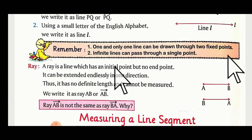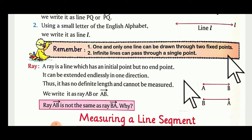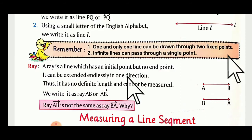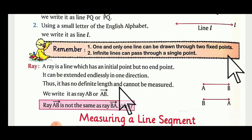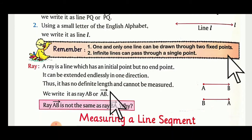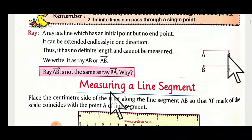What is a ray? A ray is a line which has an initial point but no end point. The initial point is fixed, but the ending is not mentioned — it can be extended in one direction endlessly. It has no definite length and cannot be measured. We write it as ray AB, or AB with an arrow mark showing the direction.